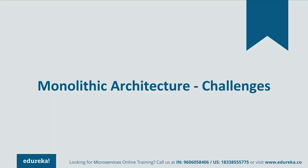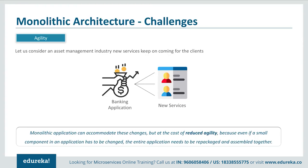Let's understand these challenges one by one. The first challenge is agility. Consider an asset management industry where different clients come with different investments and have to be offered different services. If any new services had to be given to new clients or any new changes had to be made, the monolithic application could accommodate those changes — but at the cost of reduced agility. This happened because even if a small component in an application had to be changed, the entire application had to be repackaged together.